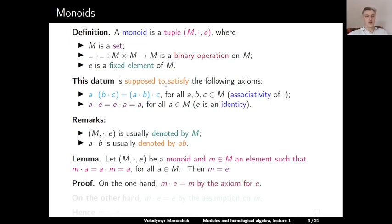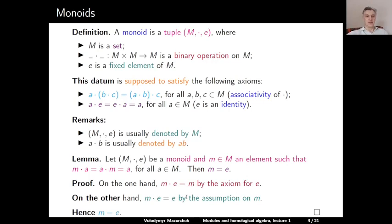Proof: on the one hand, m·E = m by the axiom for our identity element E. On the other hand, m·E = E by our assumption on m. So m = E. This completes the proof.